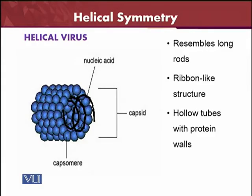Helical viruses have nucleic acid and the capsid is made up of capsomers — either protomers or capsomers. They resemble long rods with a ribbon-like structure where different ribbons are bound together. They also form hollow tubes with protein walls, which are made up of the protomers or capsomers.